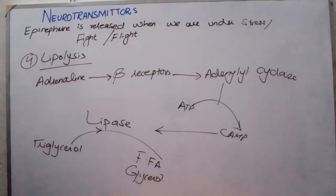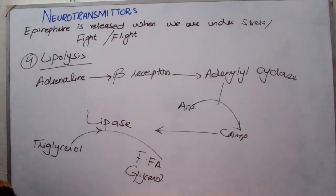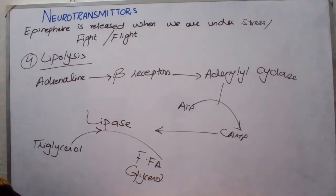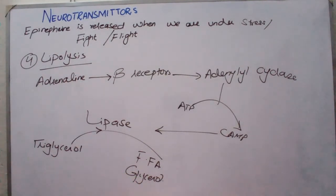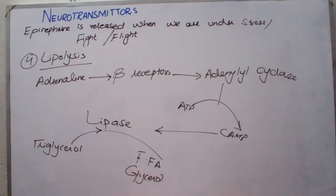In summary, epinephrine as a neurotransmitter has effects on the heart — positive chronotropic and inotropic effects — on bronchioles causing bronchodilation, increasing glucose in the blood via glycogenolysis, and increasing free fatty acids via lipolysis. Thank you for watching. Keep watching for further videos.